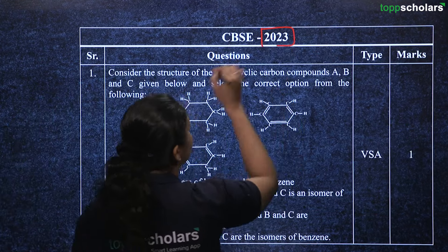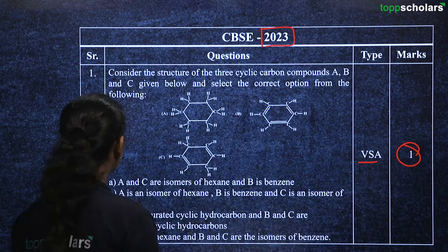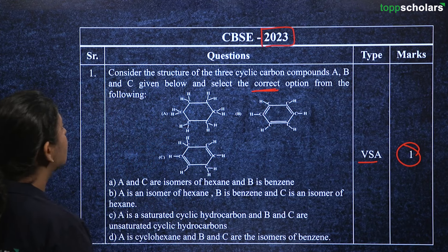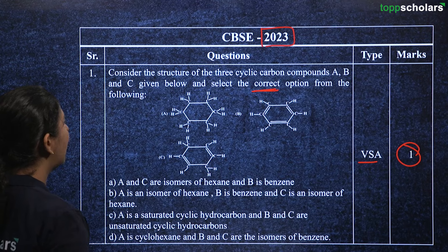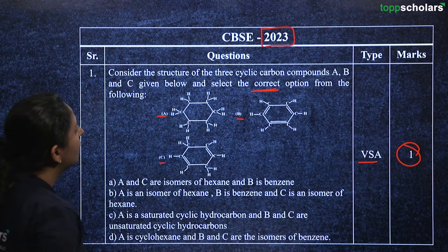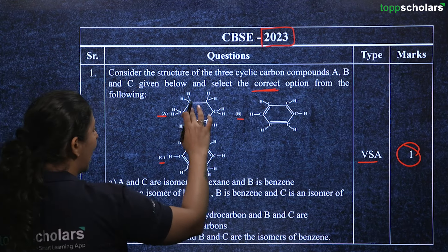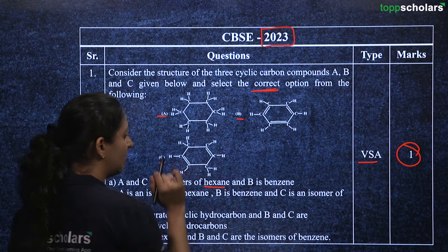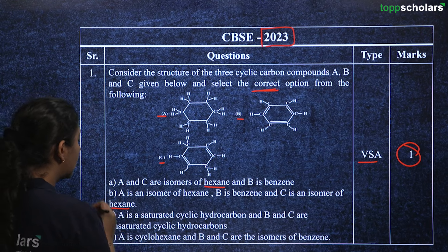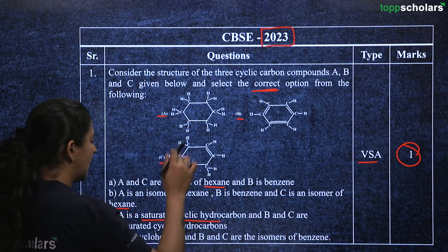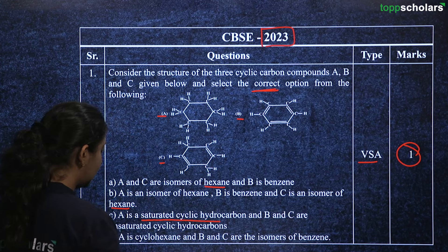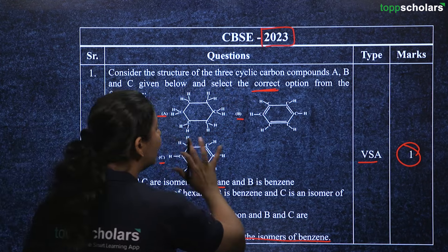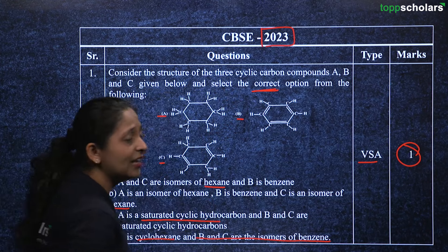From the recent 2023 paper, there is a one mark very short answer question. Consider three cyclic carbon compounds A, B and C and select the correct option. The options include: A and C are isomers of hexane and B is benzene; A is an isomer of hexane, B is benzene and C is an isomer of hexane; A is a saturated cyclic hydrocarbon and B and C are unsaturated; or A is cyclohexane and B and C are isomers of benzene. Analyze the given structures and answer accordingly.